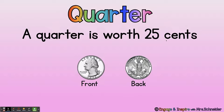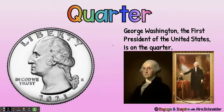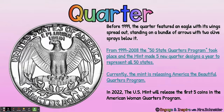A quarter is worth twenty-five cents. Here's the front of the quarter and here's the back of the quarter. George Washington, the first President of the United States, is on the quarter. So before 1999, the quarter featured an eagle with its wings spread out standing on a bundle of arrows with two olive sprays underneath it. From 1999 to 2008 there was a 50 state quarters program with many different designs. Currently the Mint is releasing America the Beautiful Quarters, and in 2022 they're going to release the first five coins of the American Woman Quarters program.